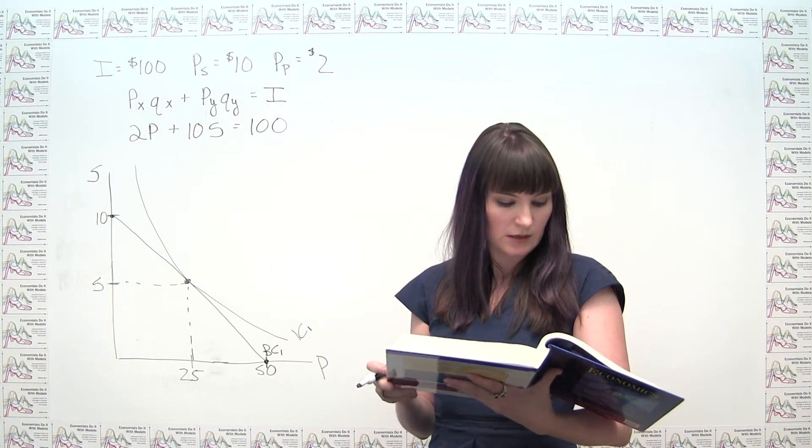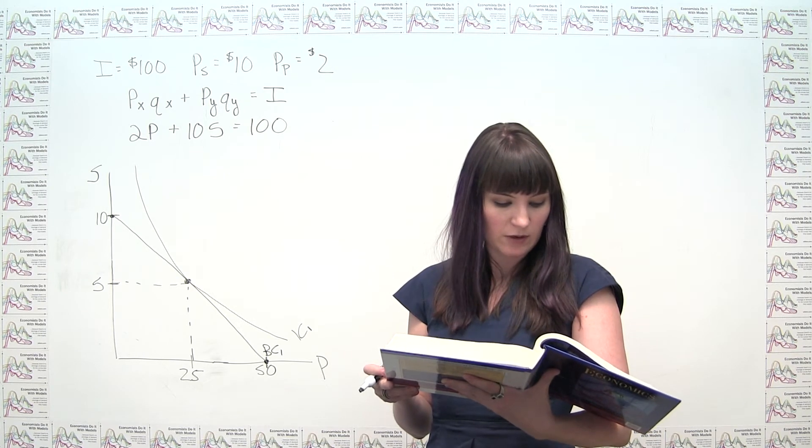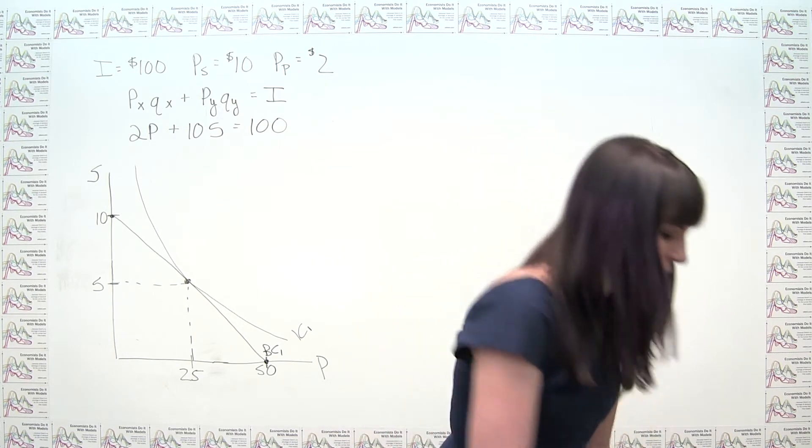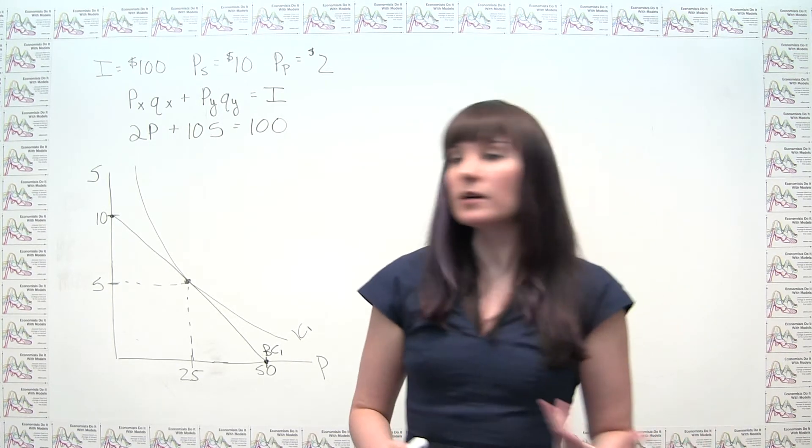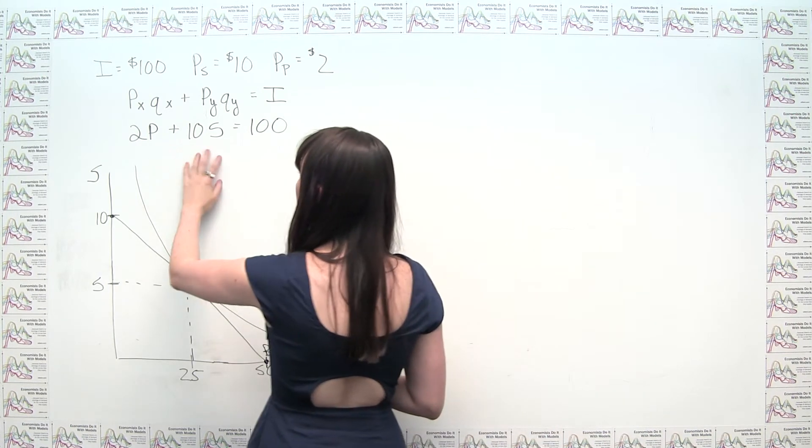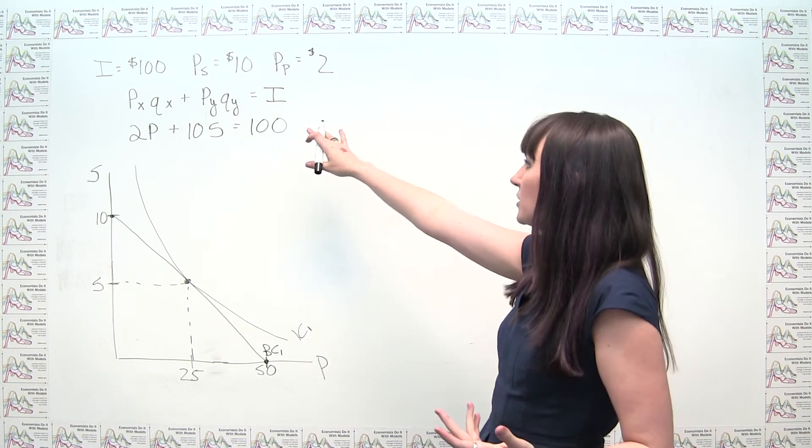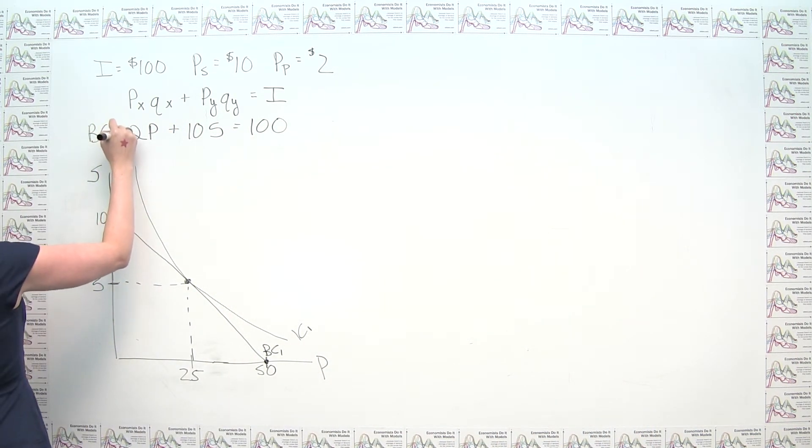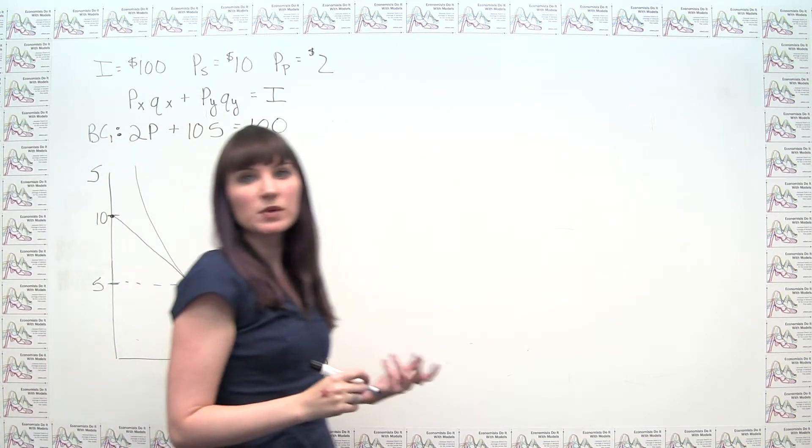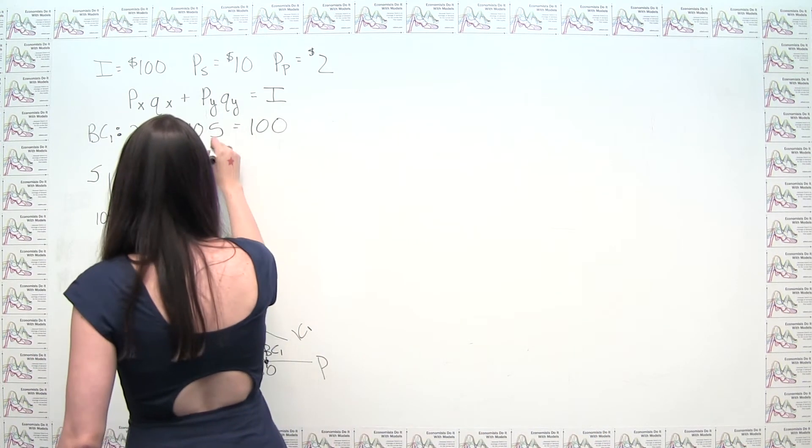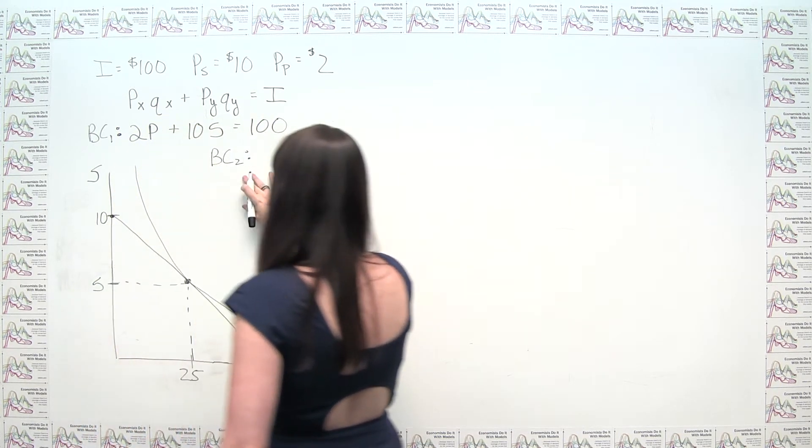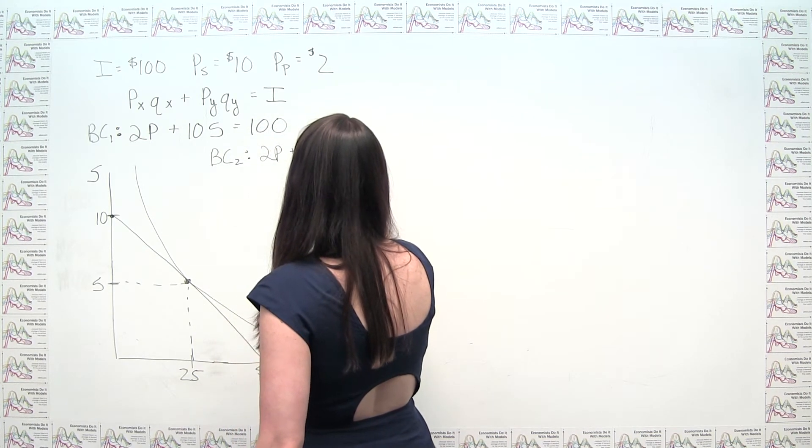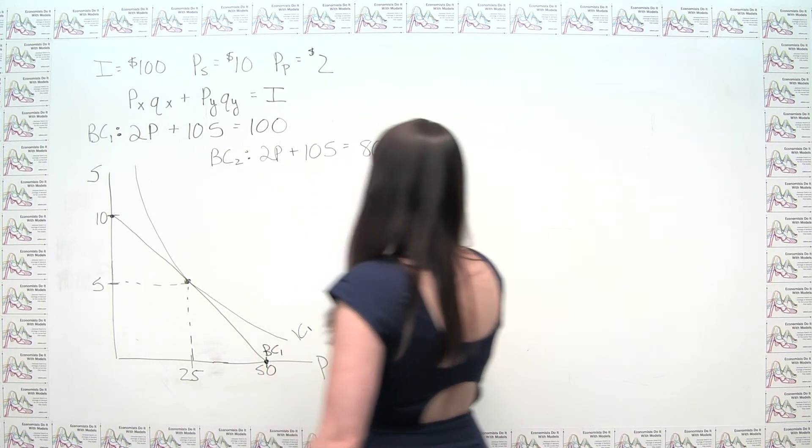The next part of the problem says, draw a new budget line for Cameron if his monthly income falls to $80. And then it asks us some more stuff, but let's at least start with that. So now, we notice none of the prices of our goods have changed. It's only our income that's changed. So if this is our budget constraint 1, then it must be the case that our budget constraint 2, or our new budget constraint, is just 2p plus 10s equals 80.